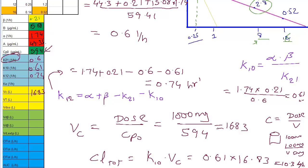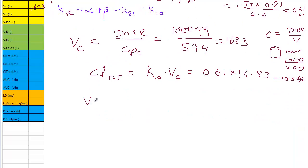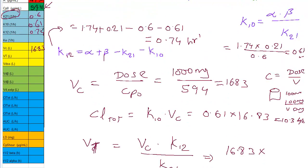Now that we know the clearance total and also the Vc, let's calculate the Vt, which is the final step for our VdSS. Vt is equal to Vc times K12 divided by K21. You know the Vc is 16.83, Vc times K12 is how much? K12 is 0.74 divided by K21, 0.6. If you solve for this, you'll get a Vt of 20.81 approximately.